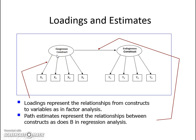Here you can see that there are two constructs, one being exogenous and another being endogenous. The loadings are represented by the arrows. There are two sets of arrows. One set of arrows represents the relationships from the construct to the variables in the factor analysis. You can see that there are x1, x2, x3, x4 — these are the observed variables under the exogenous construct.